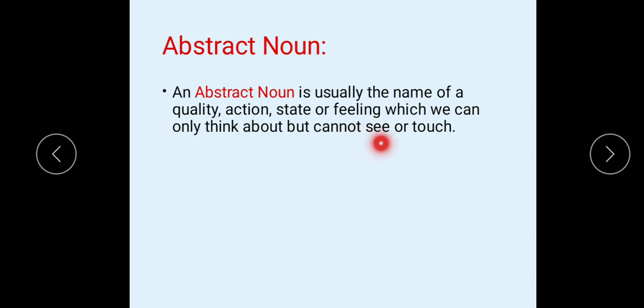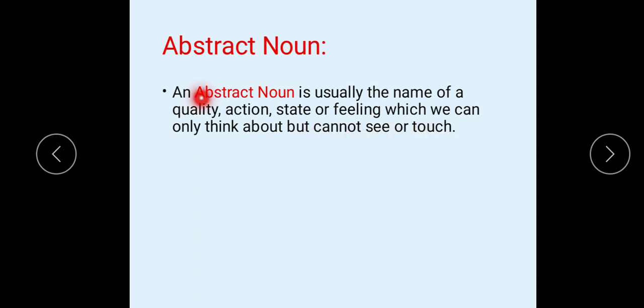An abstract noun is the name of a quality, action, state or feeling which we can only think about but cannot see or touch. It is called abstract noun.